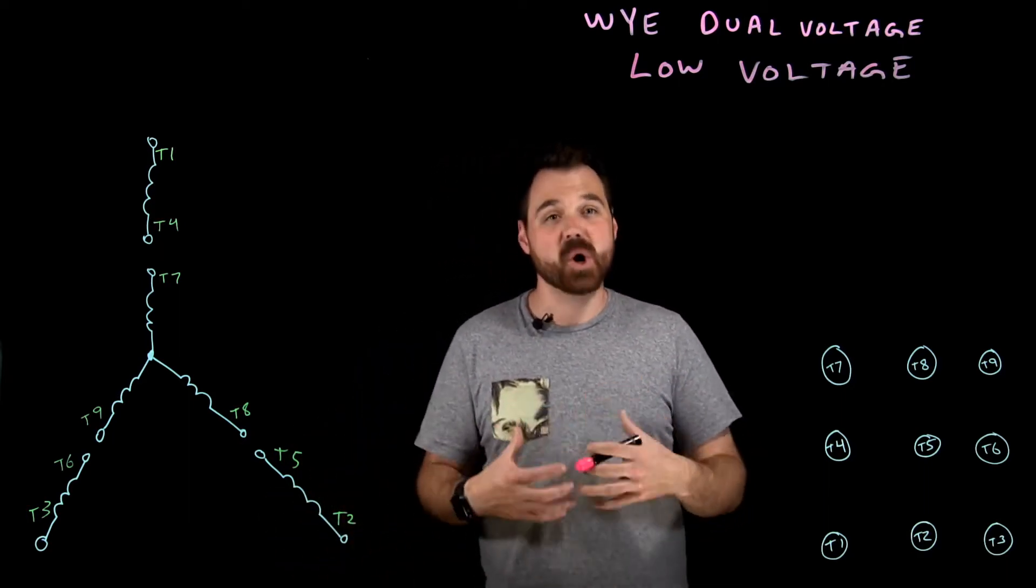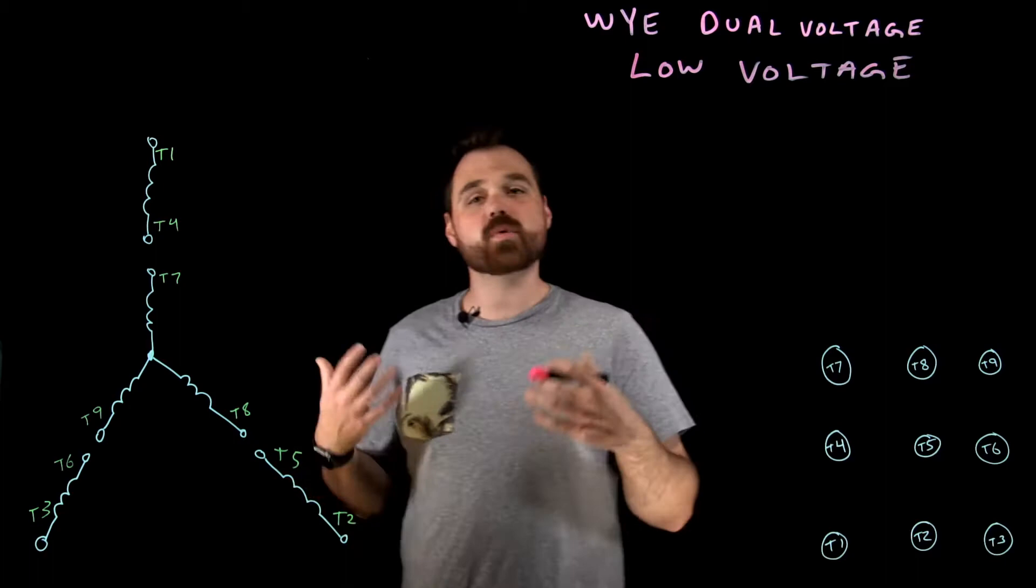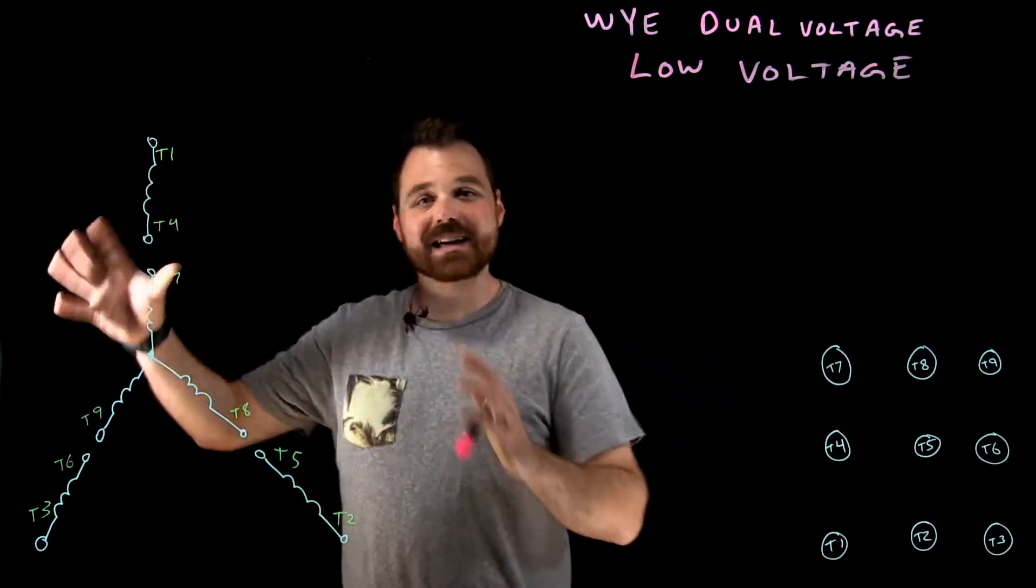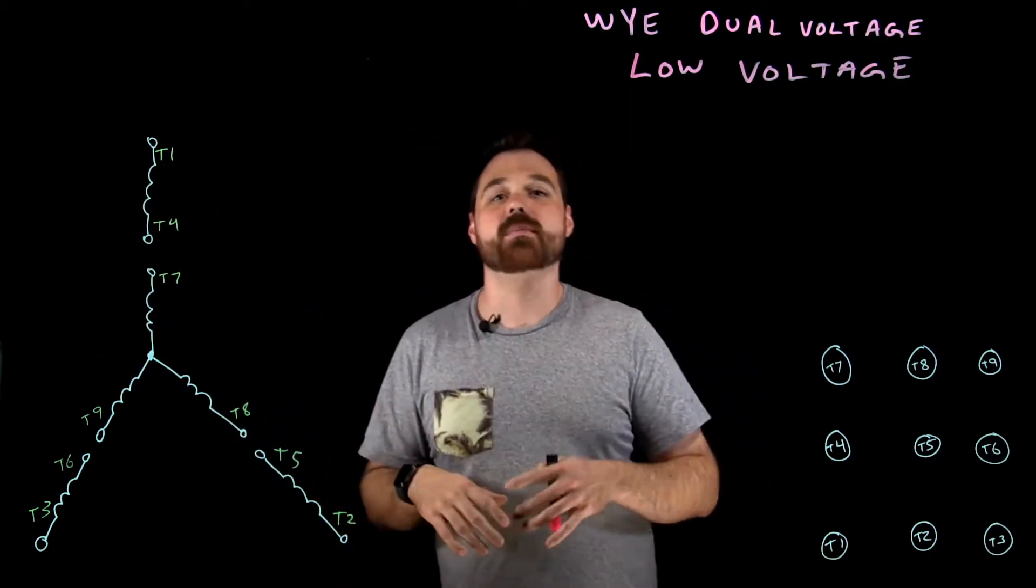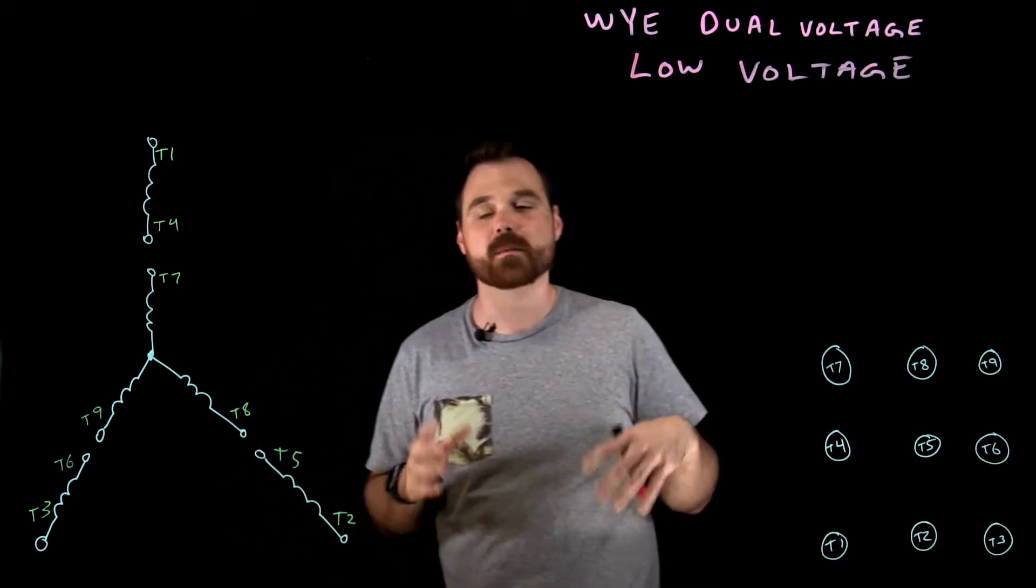In this case, we're going to talk about a low voltage connection, which means we're going to be taking the windings inside this motor. This is a Y motor - you can check out my Delta motors as well in the playlist.